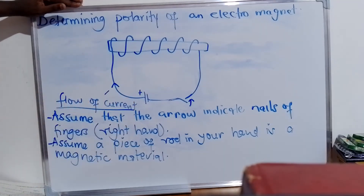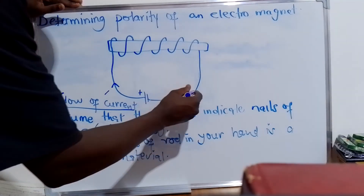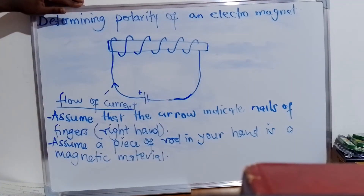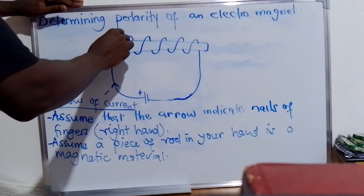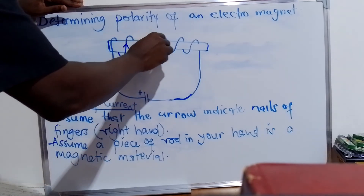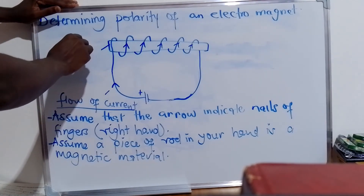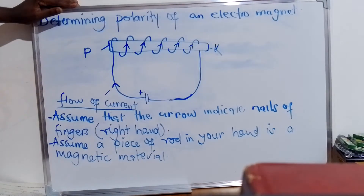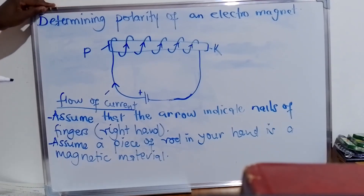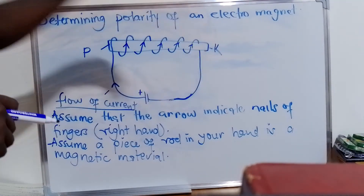As I said, this arrow shows the flow of current, and current flows from the positive terminal. Now let's close the switch and complete the circuit to allow current flow. Following the arrow, this will be up, up, up. Now let's assume this end is P and this end is K. The question is: what pole of the magnet will P become, and what pole will K become?